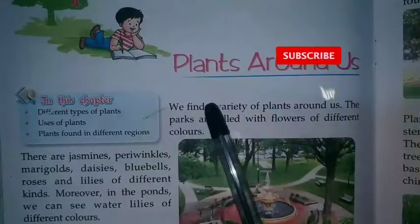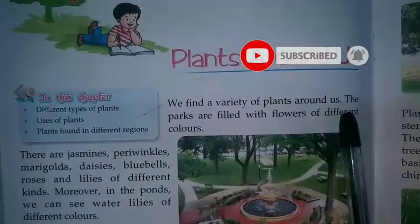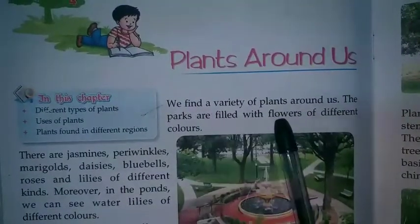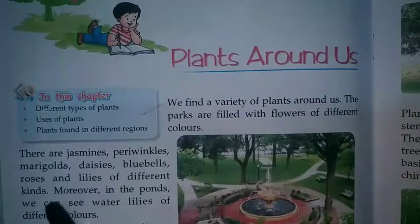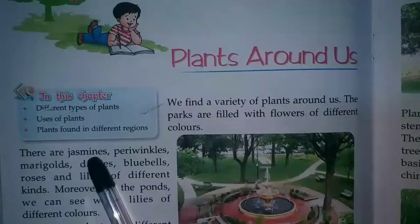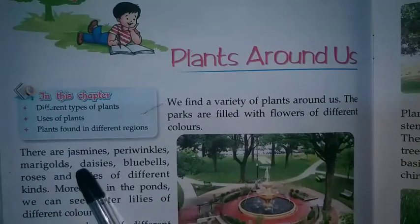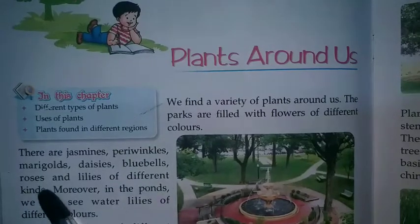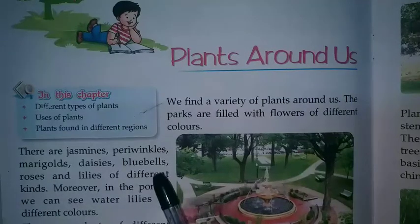We find a variety of plants around us. The parks are filled with flowers of different colors. There are jasmines, periwinkles, marigolds, daisies, bluebells, roses and lilies of different kinds.